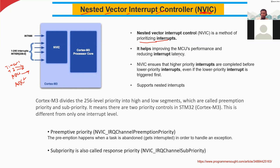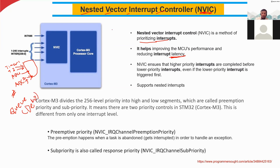NVIC helps improve the MCU's performance and reduce interrupt latency. For example, if I get the ADC two request fourth at the last, it needs to wait a long time in the queue. I got the timer request one first, timer request two second, ADC one request third, and ADC two request fourth. If I assign high priority to ADC two, I will immediately execute that request and avoid the delay. All these things we can set in the NVIC register.